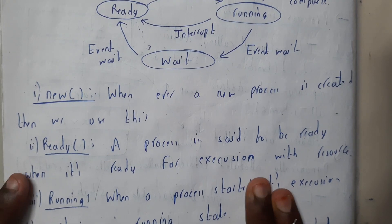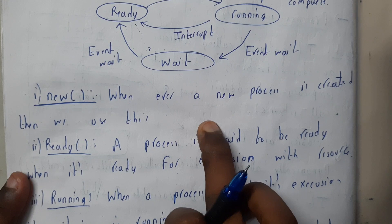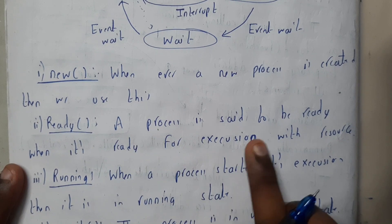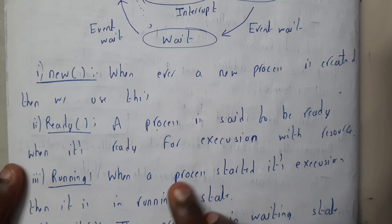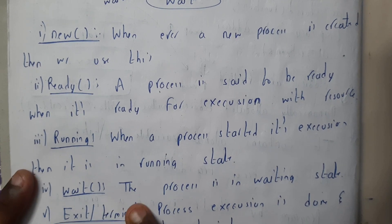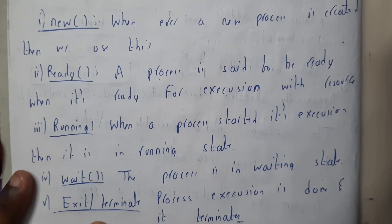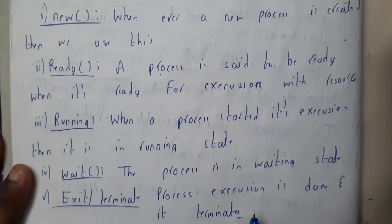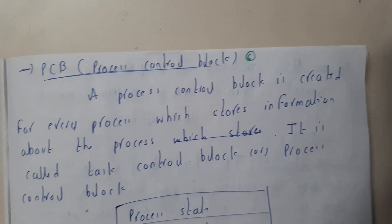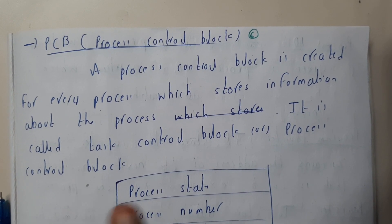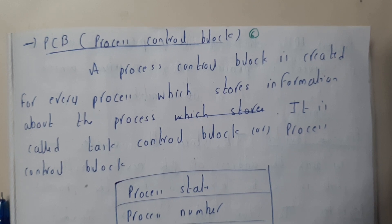New: whenever a new process is created we use this state. Ready: a process is set to be ready when it is ready for execution along with resources. Running: when a process starts its execution then it is in running state. Wait: the process is waiting in waiting state. Exit or terminate: process execution is done and it terminates. So once the process execution is done the process will be terminated. I hope everyone got a small idea on process states. In the next tutorial we will be going through PCB, which is nothing but Process Control Block. Thank you, thanks for watching.